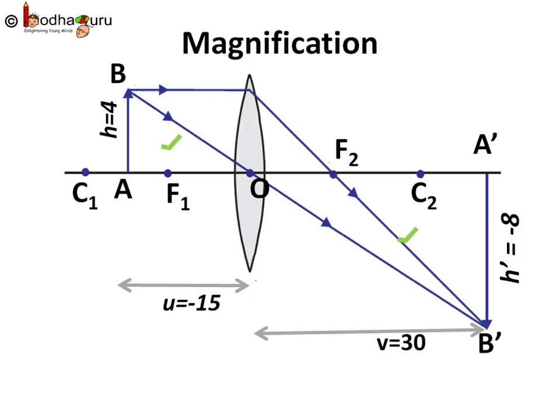Say height of the object was 4 cm and the height of the inverted image formed is 8 cm. Following the Cartesian system we write H is equal to 4 cm height of the object, and H' is equal to minus 8 cm because the image formed is below the principal axis.